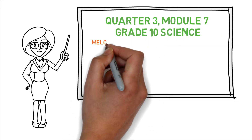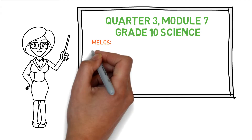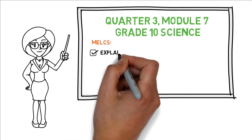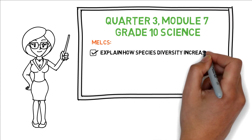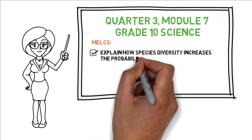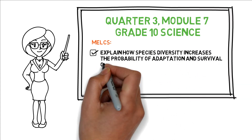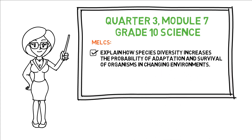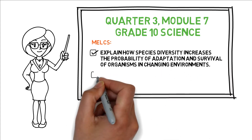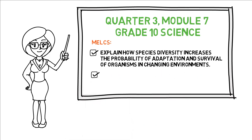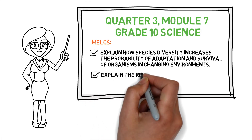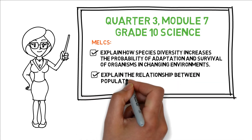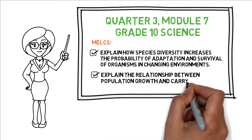In this module, the most essential learning competencies are to explain how species diversity increases the probability of adaptation and survival of organisms in changing environments, and explain the relationship between population growth and carrying capacity.